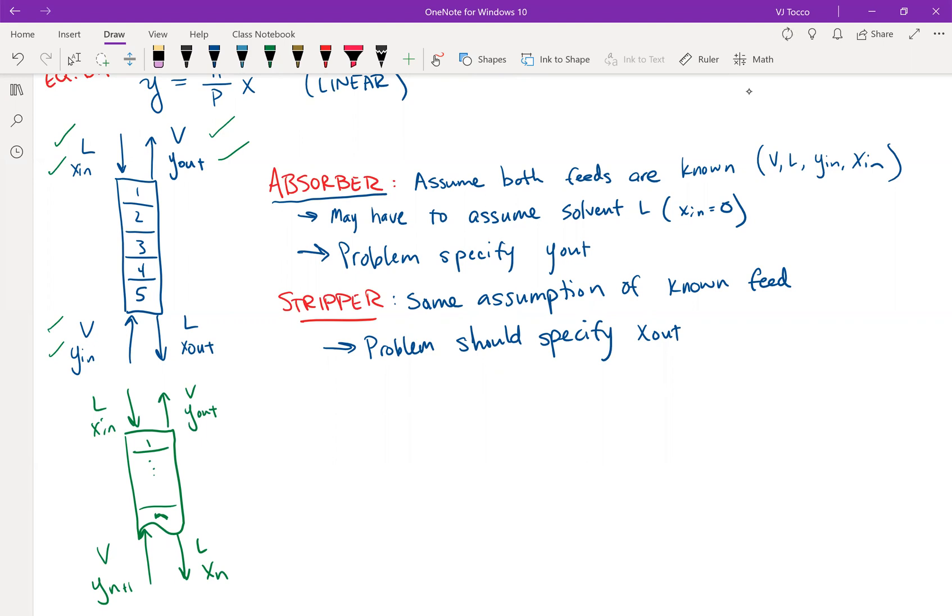So a material balance just on this portion of the column, and I'm doing this again to obtain a value of y of n plus one in terms of x and other known information. I'm choosing to do the top for the absorber because, as I said before, you know everything in the top. You know everything that is coming out of the column on this side. So for the absorber, the material balance would go L times x_n plus V times y_n plus one is equal to V times y_out plus L times x_n.